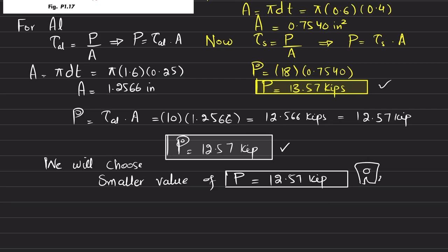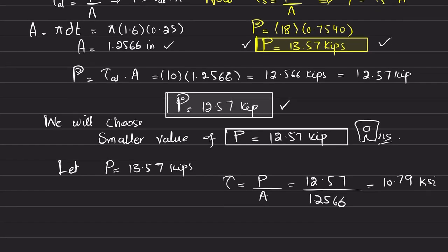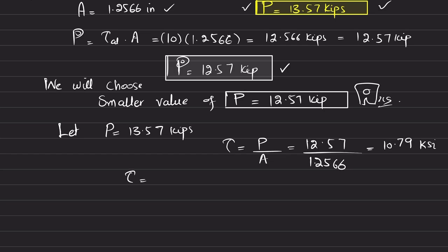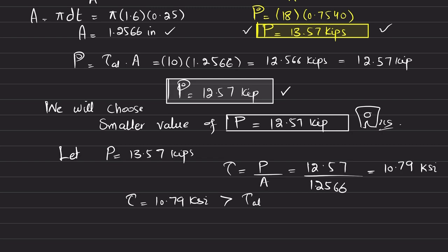P equals 12.57 kips, which is the answer. Now I will explain why we choose the smaller one. Let's say P equals 13.57 kips. We know that τ of aluminum, the shearing stress in aluminum, is equal to shearing force per unit area. So 13.57 divided by the area of aluminum, which is 1.2566, and that will give you 10.79 ksi.